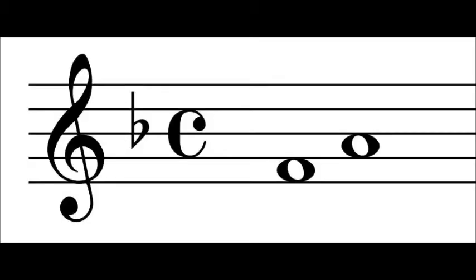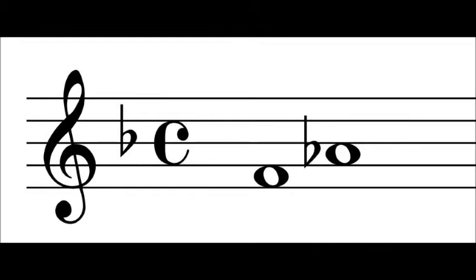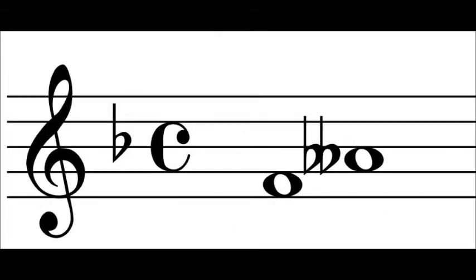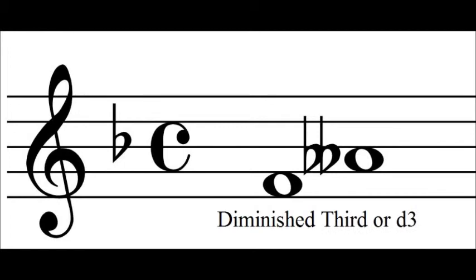Let's go back to the major third on F, and this time add a flat instead of a sharp. Now what we have is a minor third, written with a lowercase m and a three. But we can still go down one more semitone — if we add another flat to make the A a double A-flat, then we get a diminished third. Diminished thirds are written with a lowercase d or the shortened form dim.